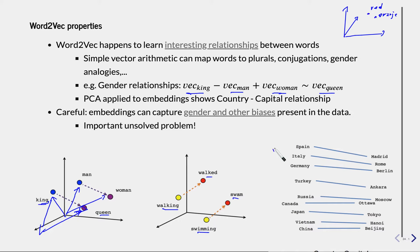If you learn a 2D PCA embedding, you would see that in the first principal component it maps countries to capitals — almost a horizontal line from Spain to Madrid, or Italy to Rome, or Germany to Berlin. This is learned as a side effect of learning the embedding; it's not designed to do that. It means the embedding actually captures interesting properties of the semantics of these words.